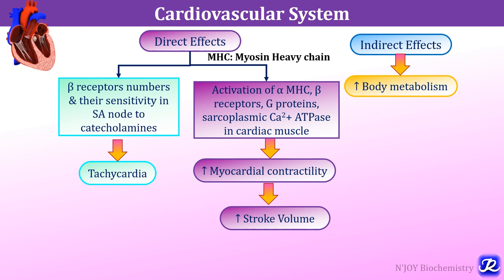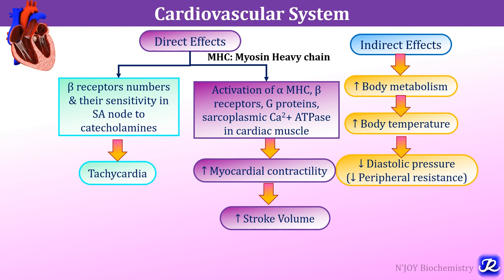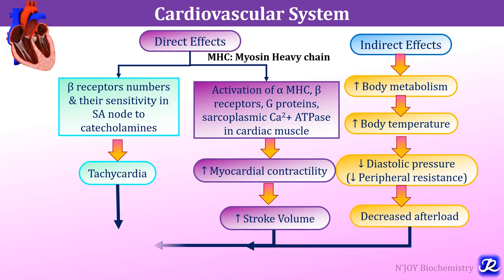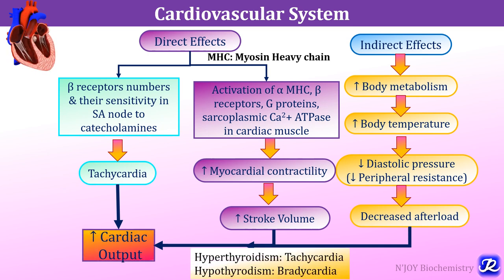The indirect cardiovascular effects include increased body metabolism leading to increased body temperature, and decreased diastolic pressure due to decreased peripheral resistance and decreased afterload. Together these mechanisms lead to increased cardiac output. In hyperthyroidism there is tachycardia, and in hypothyroidism there is bradycardia.